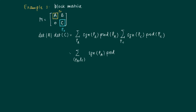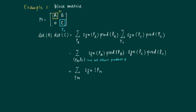We take the sum over P_A and P_C and write the total as the sign of P_A times the product of P_A times the sign of P_C times the product of P_C. If we had chosen something from the B block, this would have led to choosing from the zero part and the lower-left part of the matrix. So those patterns do not contribute to the determinant of M, and the combined pattern P_A, P_C defines a valid pattern for M.